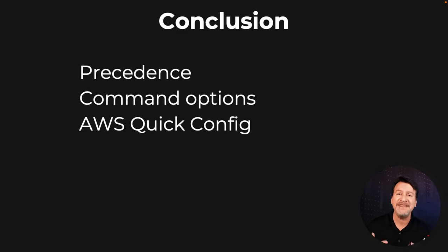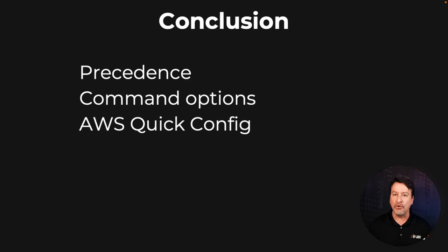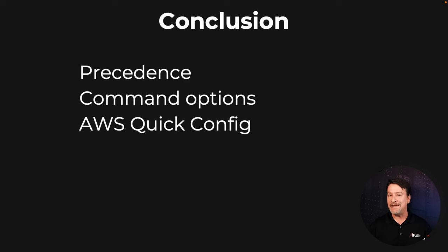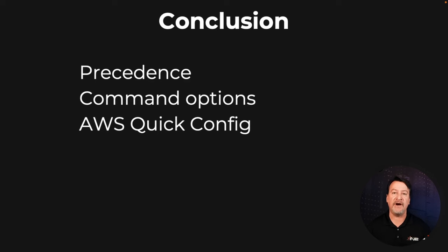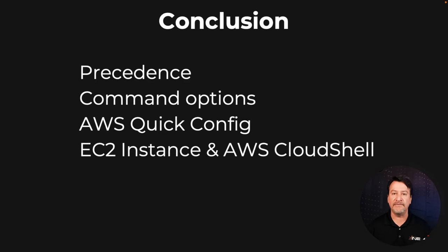Don't forget about get, set, and import. These are great ways of bringing in quickly your credentials into the environment and getting that set up for you. EC2 instance: you're going to be running AWS configure as the most popular way to do it. But in Cloud Shell, it's whoever you are logged into the console as — you pick up that permission.